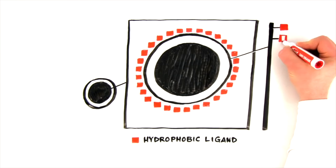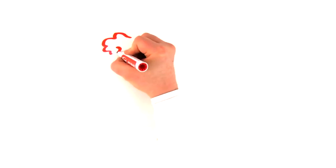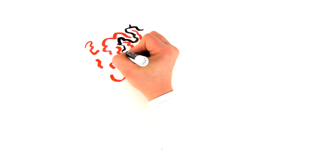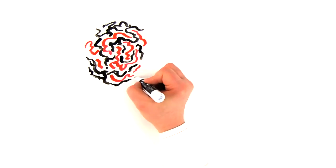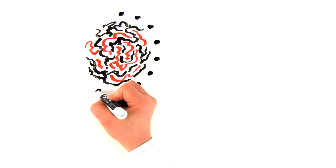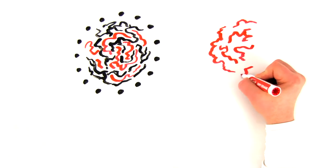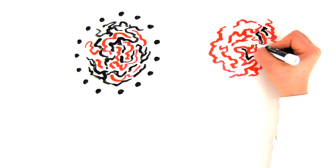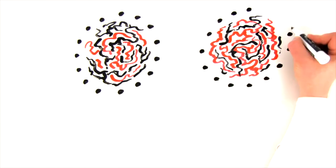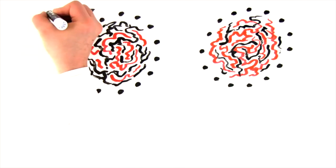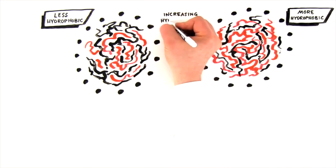These beads are coated with a special hydrophobic ligand. Proteins, due to their composition, have areas of hydrophobicity and hydrophilicity. For this illustration, hydrophobic patches on the proteins are depicted in red, whereas the color black indicates the presence of hydrophilic functionalities. The surface hydrophobicity of proteins can vary from low to high depending on the sequence and structure.